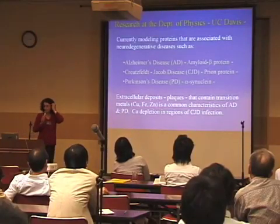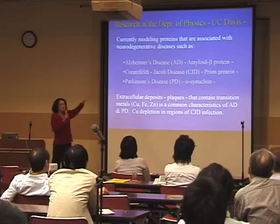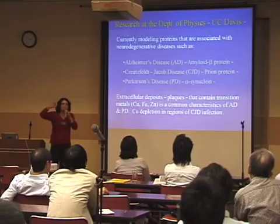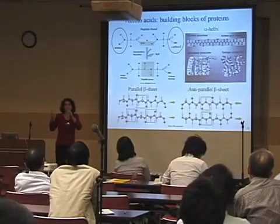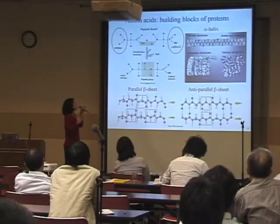Now I'm going to briefly tell you about the biological physics work from the Department of Physics at UC Davis. Here you see a list of neurodegenerative diseases with associated proteins. There are several similarities between these diseases, and shedding light on one may well be very informative to understanding others. I'm going to focus on the prion protein, which is the one associated with Creutzfeldt-Jakob disease — that's the human version of mad cow disease.